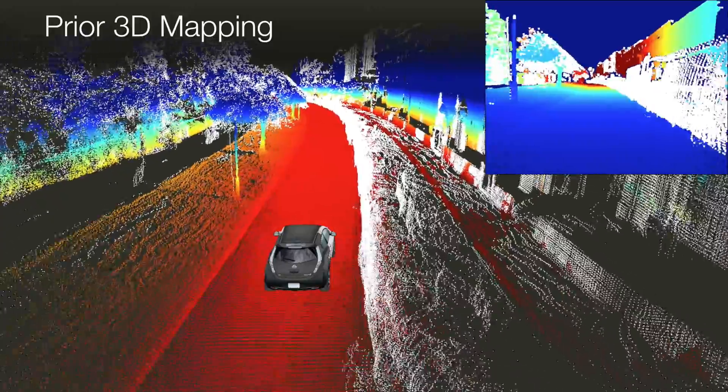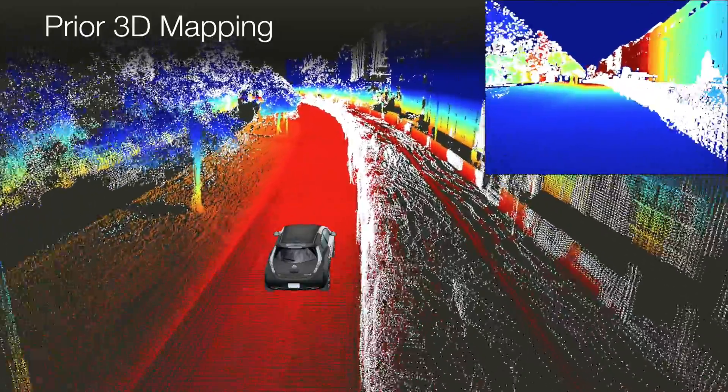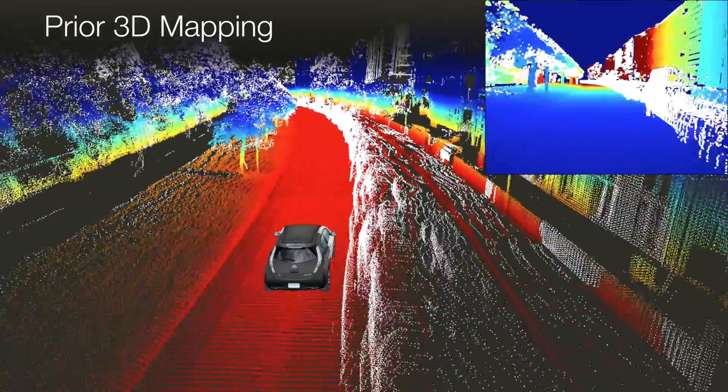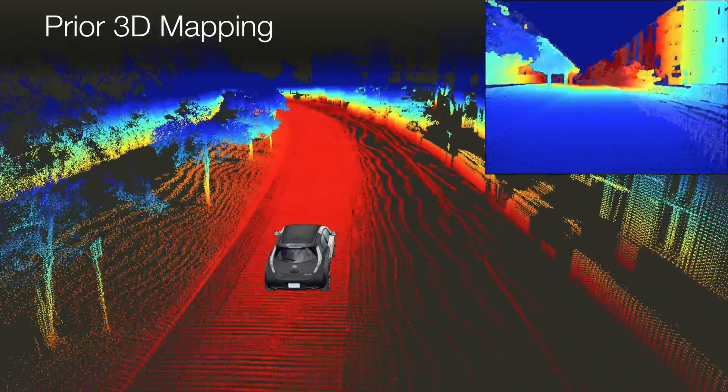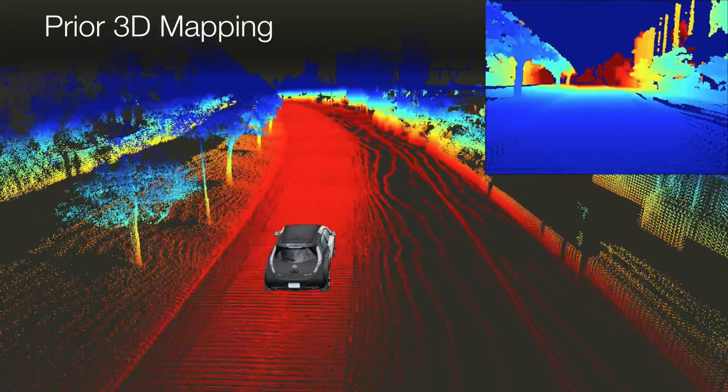We use an entropy-based approach to remove inconsistent lidar points such as parked cars and traffic across multiple mapping sessions, leaving us with a 3D prior of only the static elements of the environment.